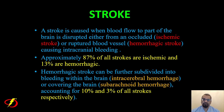A stroke is caused when blood flow to part of the brain is disrupted from either an occluded blood vessel — ischemic stroke — or a ruptured blood vessel — hemorrhagic stroke. Approximately 87% of all strokes are ischemic and 13% are hemorrhagic. The overwhelming majority of all strokes are ischemic, caused by blocked blood vessels, whereas the minority are hemorrhagic, caused by leaking blood vessels in or covering the brain.